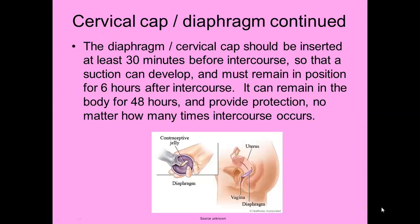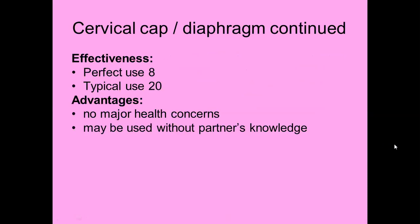The diaphragm should be inserted at least 30 minutes before intercourse so that a suction develops between it and the uterus. It should remain inside the vagina for at least six hours after intercourse, but can remain in position for up to 48 hours, providing protection from pregnancy no matter how many times intercourse occurs. Perfect use 8, typical use 20.